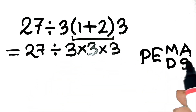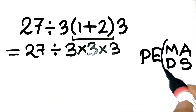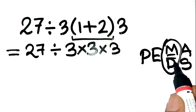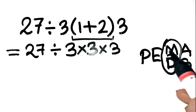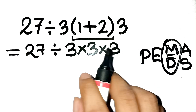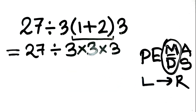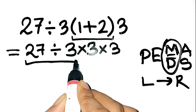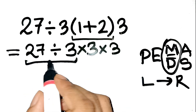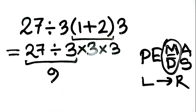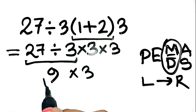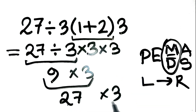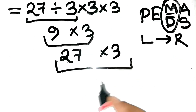Now, here's the key: multiplication and division are equal priority, so you don't automatically do multiplication first — you work from left to right. 27 divided by 3 equals 9. Next, 9 times 3 equals 27. Finally, 27 times 3 equals 81.